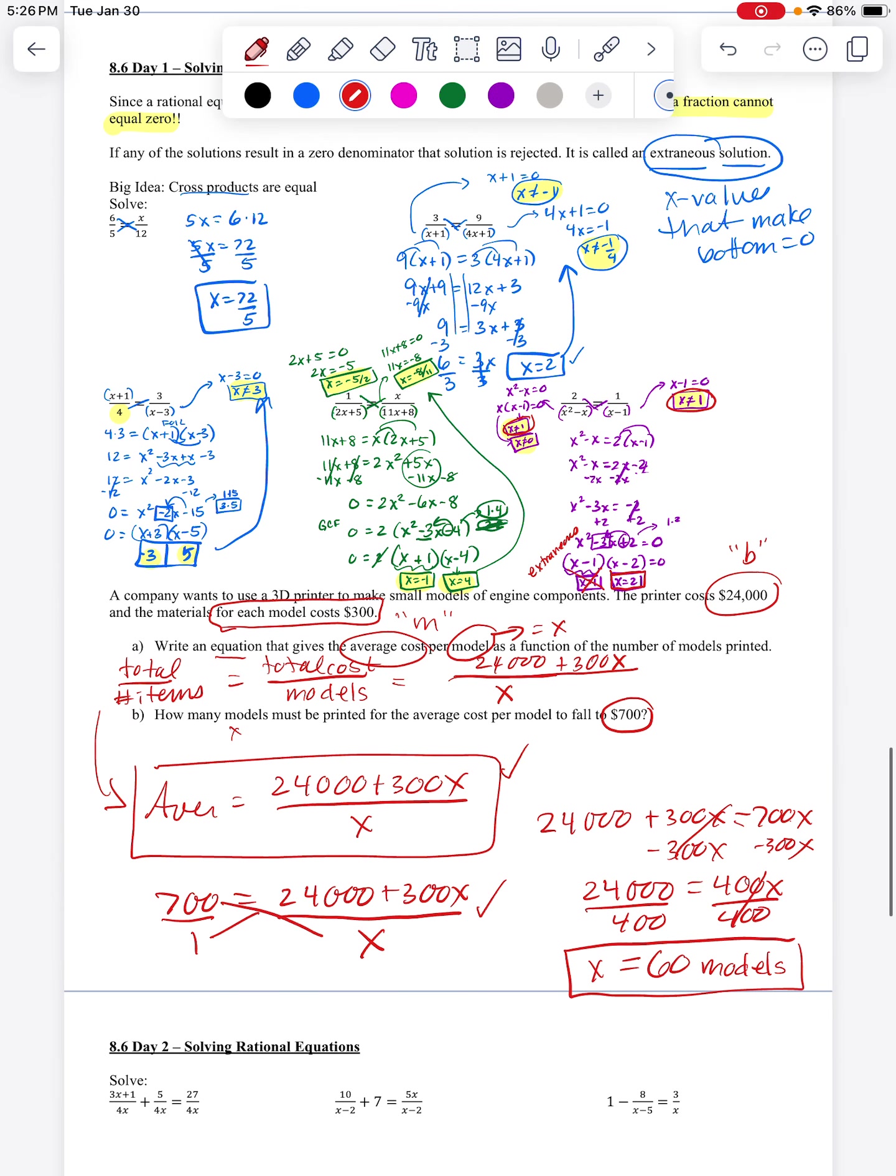So these are all cross-multiplying. Tomorrow we'll dig in a little deeper. But when you have one fraction equals the other, you're going to do cross-multiplying. And then this whole business of the extraneous solution is something that makes them different than normal cross-multiplying. Hope that helps. Bye.